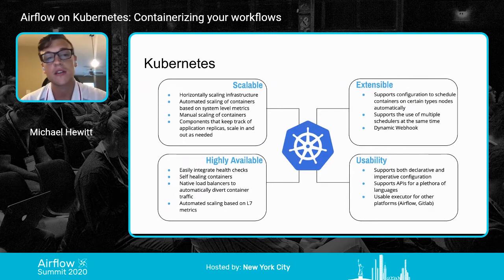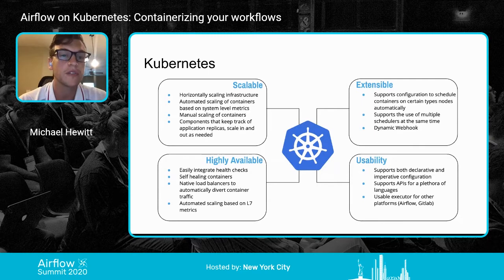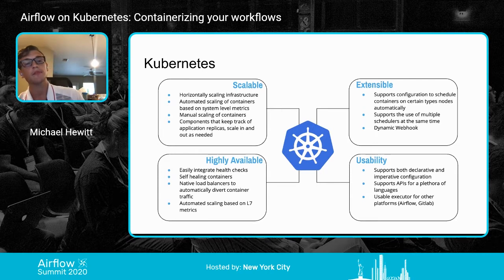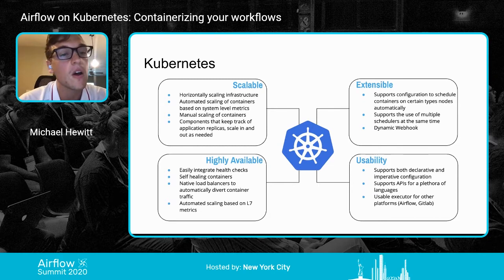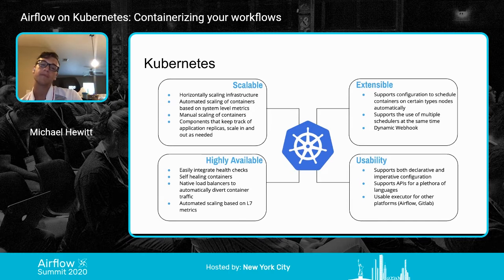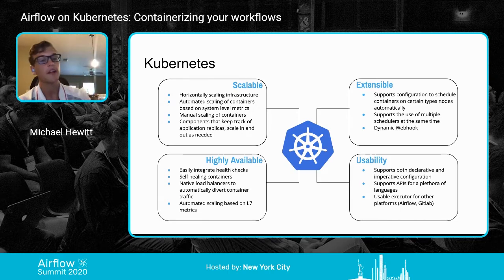Kubernetes is a container orchestrator that uses declarative configuration and automation to maintain and manage your containers. Kubernetes is very scalable — the infrastructure or nodes can scale in and out either automatically or manually. For example, we use Amazon's managed Kubernetes service under an auto scaling group, so we can scale up within as little as three minutes automatically. You can also scale the containers on Kubernetes in an automated or manual manner, based on system level metrics or even L7 metrics.